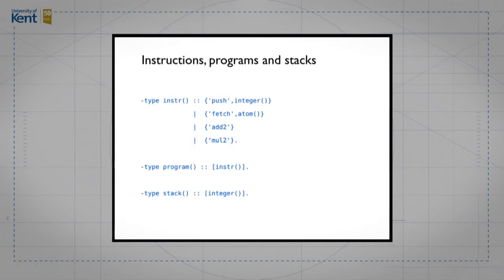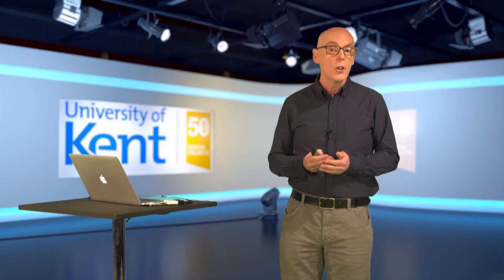We have a type of instructions, so what will a program look like? The answer is we'll use Erlang lists — a list of instructions represents a program. As we saw in the earlier example, we have a list of five instructions for our example expression. We'll also use Erlang lists to represent the stack, which will be a list of integers.